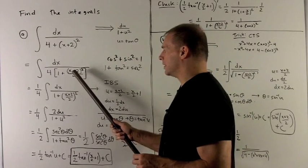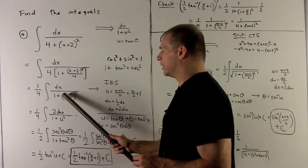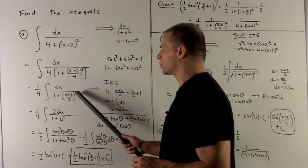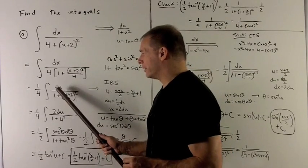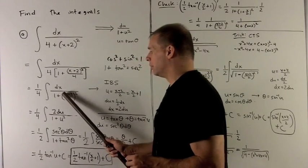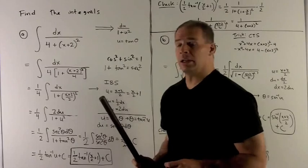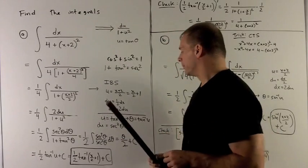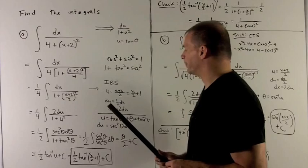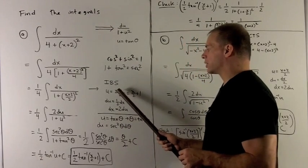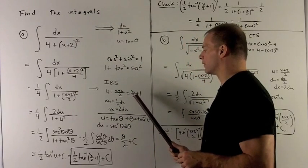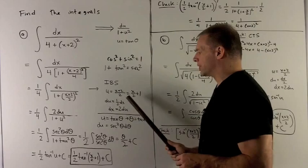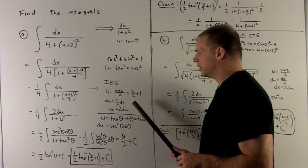Now I can take the 4 and move it to the inside of the square. So that will become x plus 2 over 2 squared. And now I have dx over 1 plus something squared. So that's something I'm going to let be equal to u. And then I can use the tan substitution. So I let u be equal to x plus 2 over 2, which is x over 2 plus 1. Du is a half dx, dx is equal to 2 du.